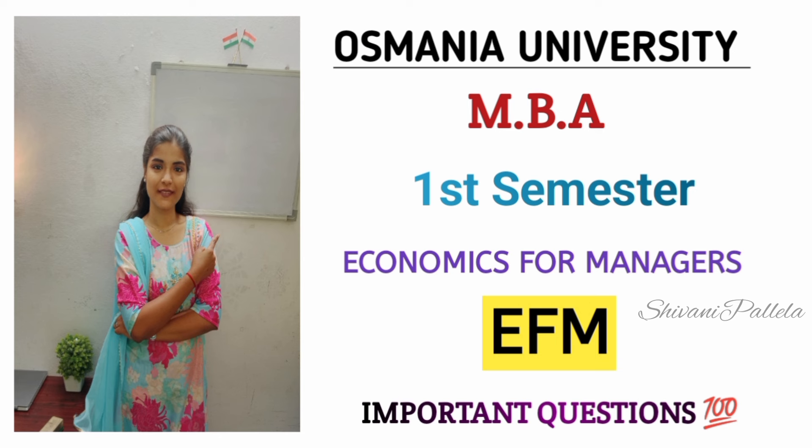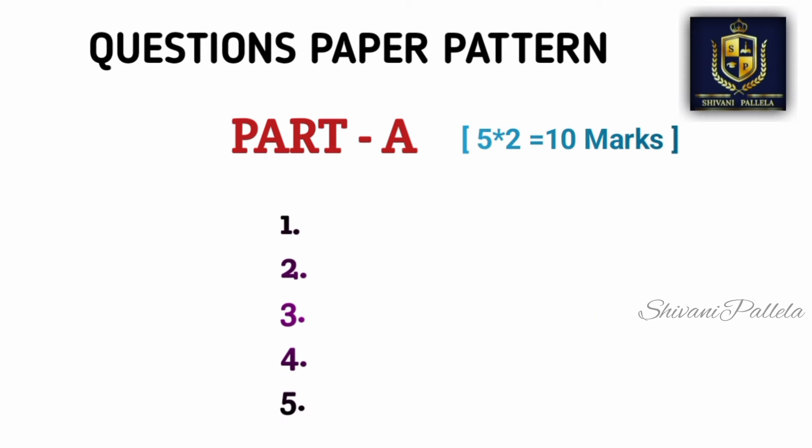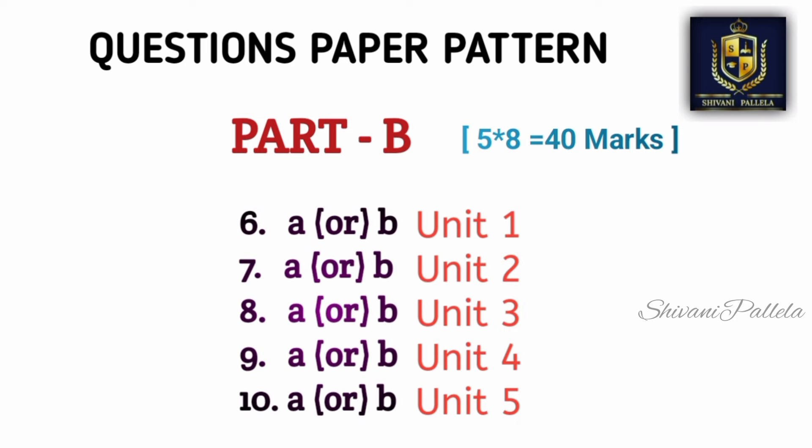Let's get into the video. First we will discuss the question paper pattern. In Part A you will have five questions, and you need to attempt all five. Each carries two marks, so Part A consists of 10 marks total. For two marks, five to six lines is more than enough in your answer booklet. Part A is a little bit easy — don't concentrate too much on it.